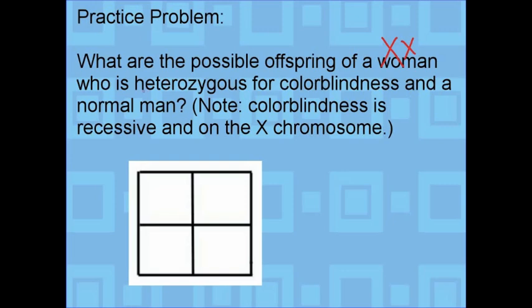it tells us that this person is heterozygous, and we have to look further down — colorblindness is recessive. Heterozygous individuals are always going to have a big and a small letter. So those would be the alleles for the woman. She has an X chromosome with a dominant allele and an X chromosome with a recessive allele.